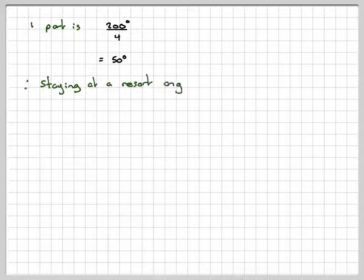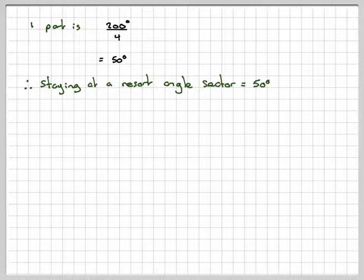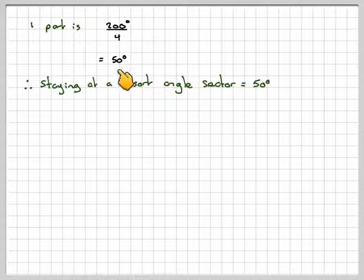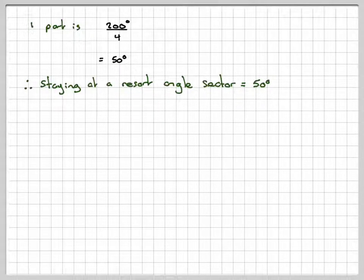Staying at a resort sector will be 50 degrees because it was in a ratio of 3 to 1, so it was one part of the ratio, which is 50 degrees.